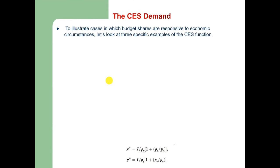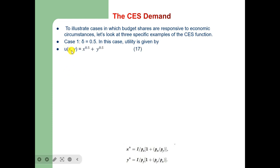Let us now discuss the constant elasticity of substitution (CES) demand. To illustrate cases where budget shares are responsive to economic circumstances, we look at three examples of the CES function. In Case 1 where σ = 0.5, utility is given by u(x,y) = x^0.5 + y^0.5. The difference from Cobb-Douglas is that this utility function is additive, not multiplicative.